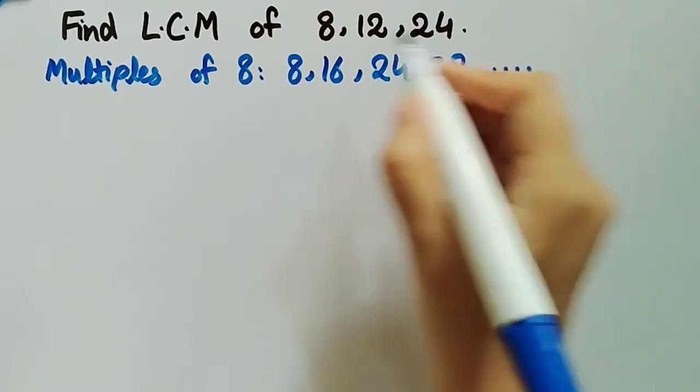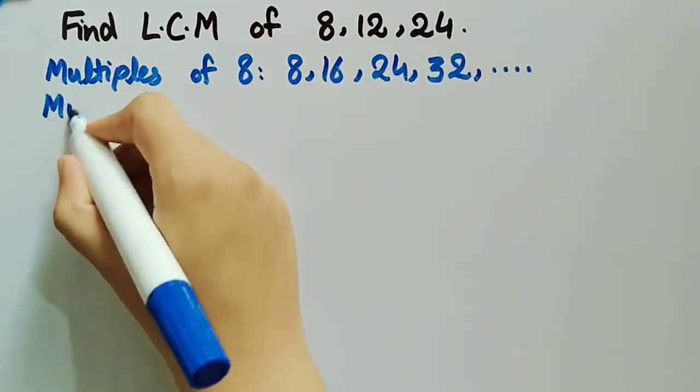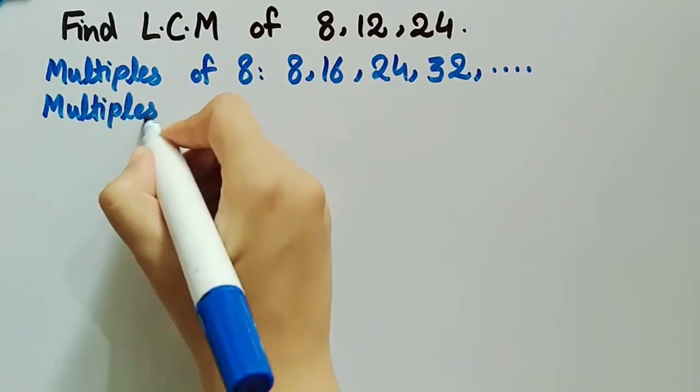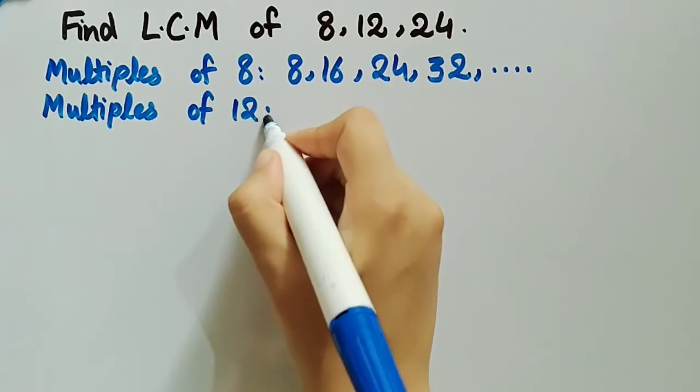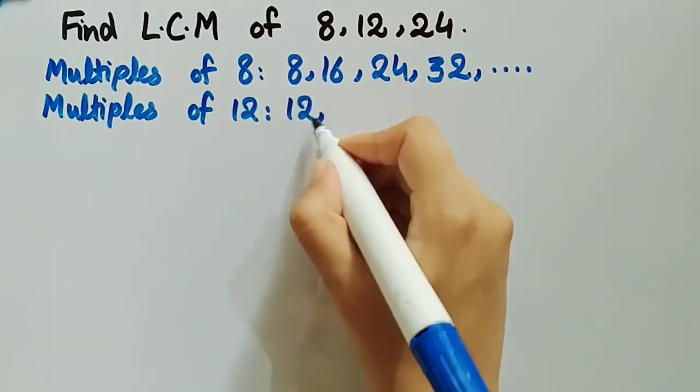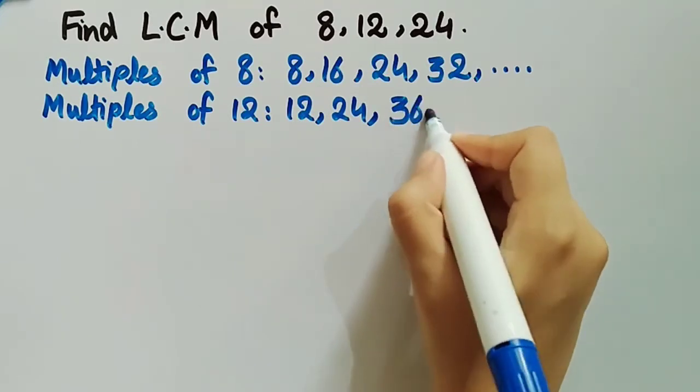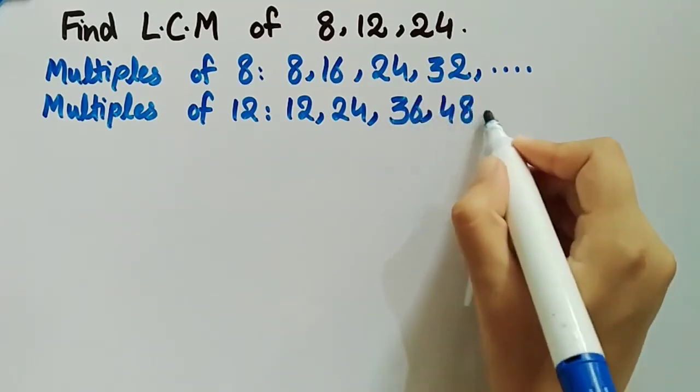Now we will write multiples of 12, which are 12, 24, 36, 48, and so on.